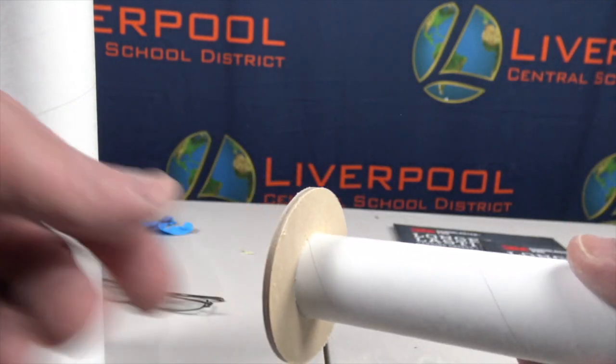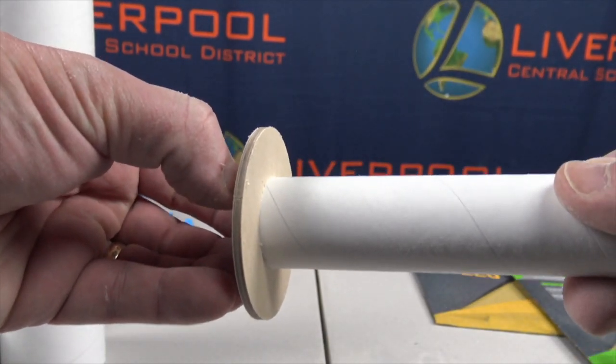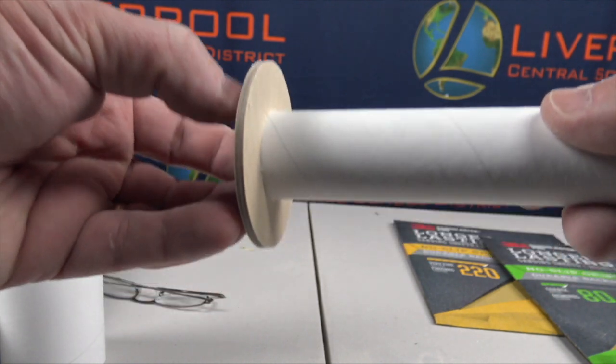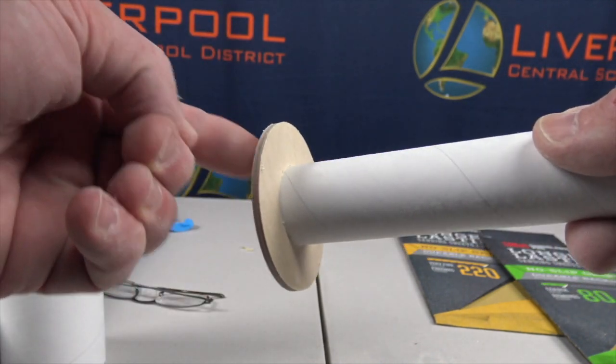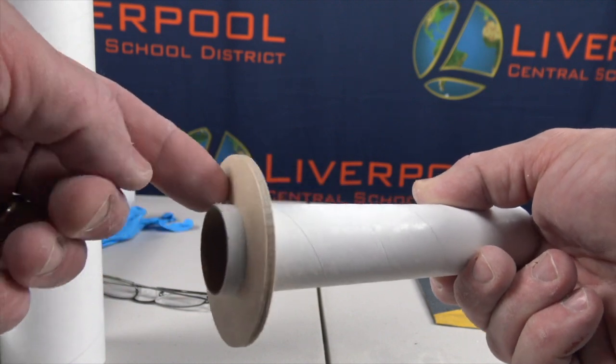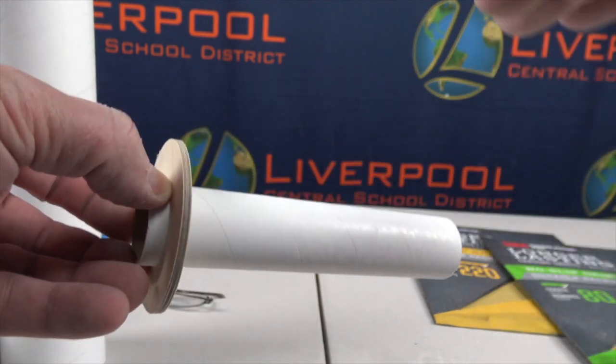This is an extremely important piece because all that thrust is placed on these wooden rings, the glue that attaches them to our motor mount itself, and then the fins.